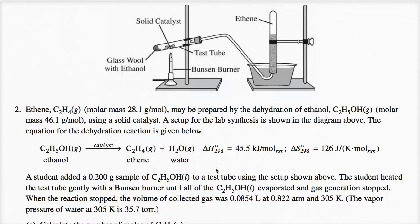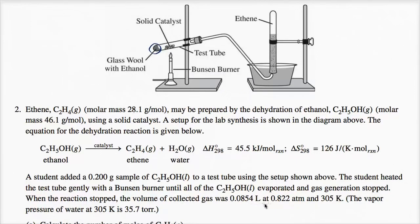Here are some metrics on the actual reaction. A student added a 0.200 gram sample of ethanol, C2H5OH, to a test tube using the setup shown. The glass wool soaked in ethanol is positioned at one end, with a solid catalyst further along the tube. The student heated the test tube gently with the Bunsen burner until all of the ethanol evaporated and gas generation stopped. When the reaction stopped, the volume of gas collected was 0.0854 liters at 0.822 atmospheres and 305 Kelvin.